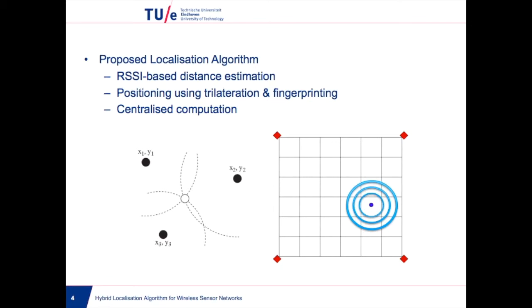In normal operation, a node entering the area will sense the signals received by the anchor nodes, which will then be compared with the predefined database. The position is estimated based on the closest match with the database.